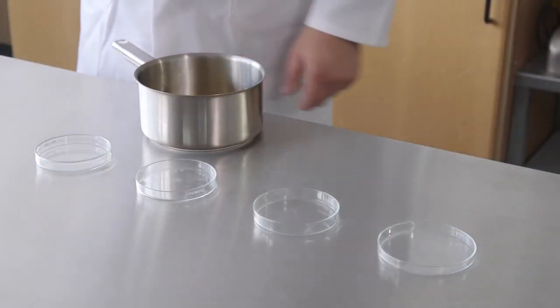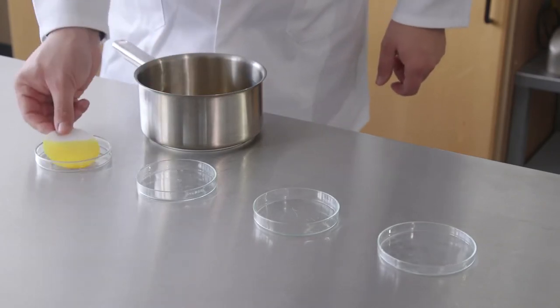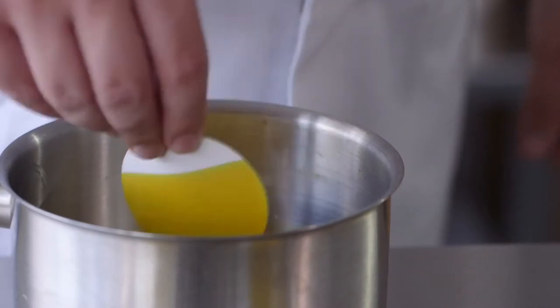Now to the experiment. Take a small disc of filter paper and dip it into the fat. Take it out, then place it in a petri dish. Repeat this until you have four discs in four petri dishes.